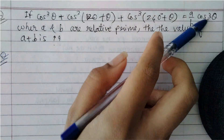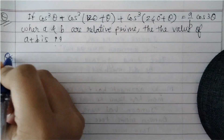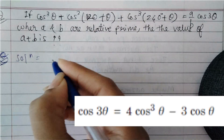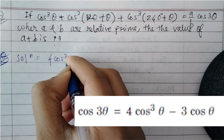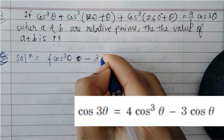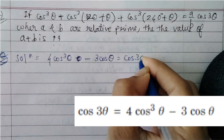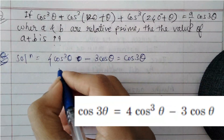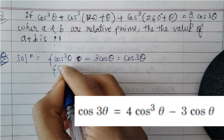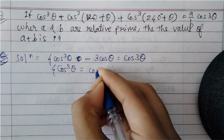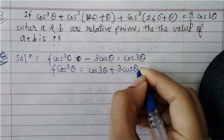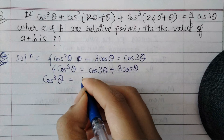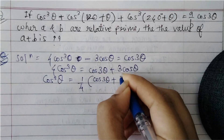In the RHS we have the term cos3θ. We know the formula: 4cos³θ − 3cosθ = cos3θ. So 4cos³θ = cos3θ + 3cosθ, which means cos³θ = (1/4)(cos3θ + 3cosθ). This will be our first equation to use in the LHS.